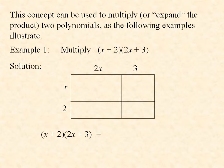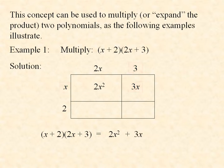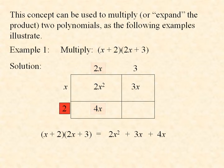We look at the upper left rectangle. Its width is x and its length is 2x, so its area is x times 2x, which is 2x squared. The upper right rectangle has width x and length 3, so its area is 3x. The lower left rectangle has a width of 2 and a length of 2x, so its area is 2 times 2x, which is 4x. And the lower right rectangle has a width of 2 and a length of 3, so its area is 6.